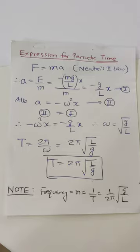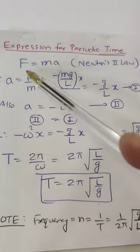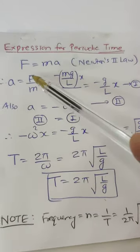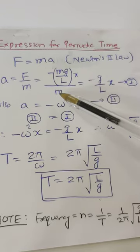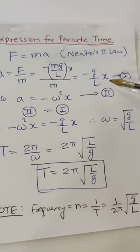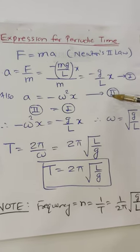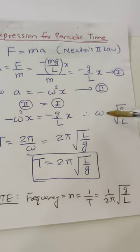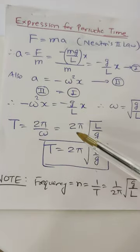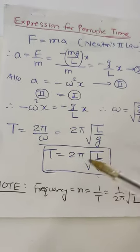This is very simple expression for periodic time of simple pendulum. F equal to ma, a is F by m. F becomes minus mg upon lx upon m, m cancel, minus g upon lx equation 1. Also a equal to minus omega square x equation 2. Equate 2 and 1. Omega is root of g by l. T is 2π by omega, 2π root of l by g.